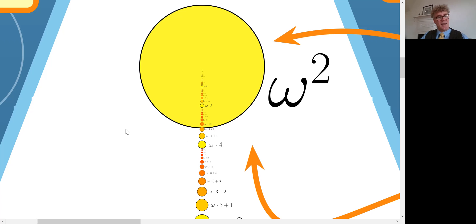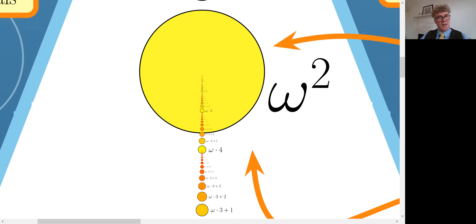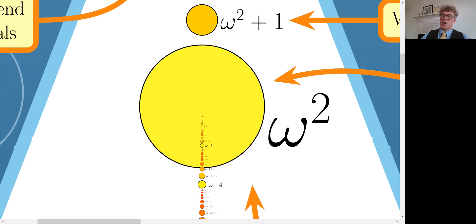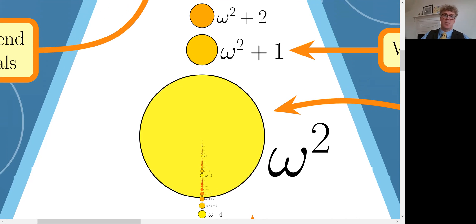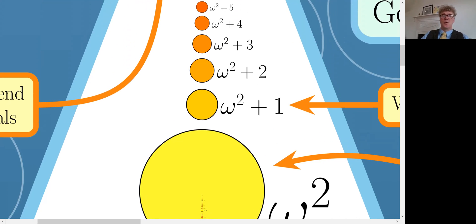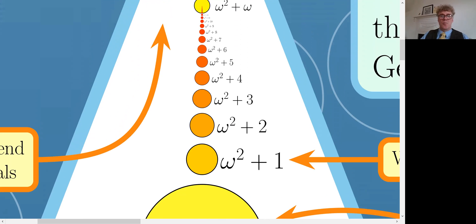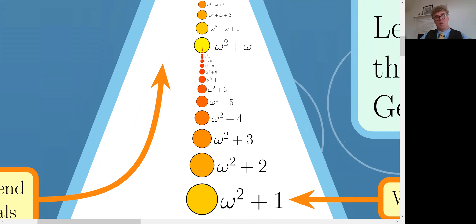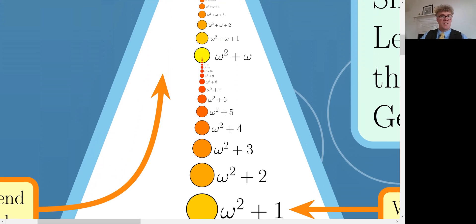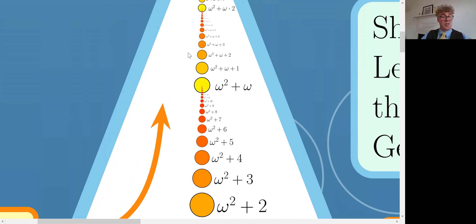Now what did I say? You can always add one and so we can make the number omega squared plus one, omega squared plus two and so on. We'll get up to omega squared plus omega. That's the first simple limit after omega squared and then of course it continues. Omega squared plus omega plus one, omega squared plus omega plus two and so on. We'll get to the next simple limit. There is no end to the ordinals as they flow through the transfinite hourglass of time.